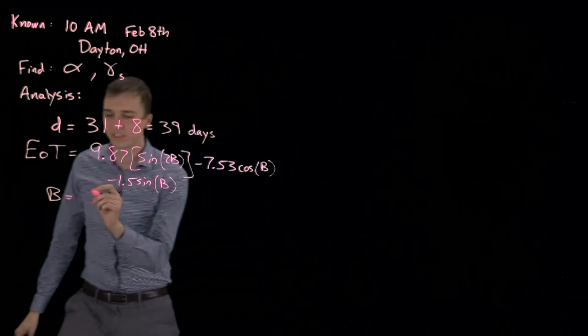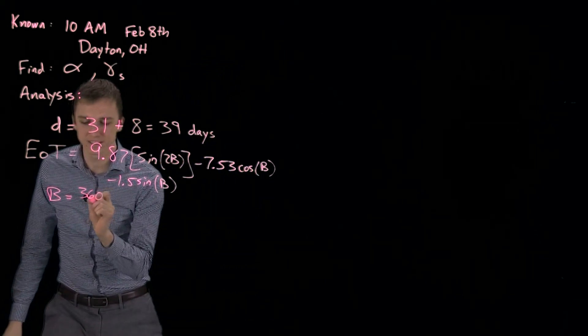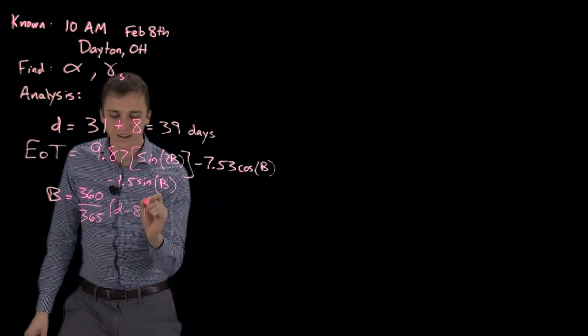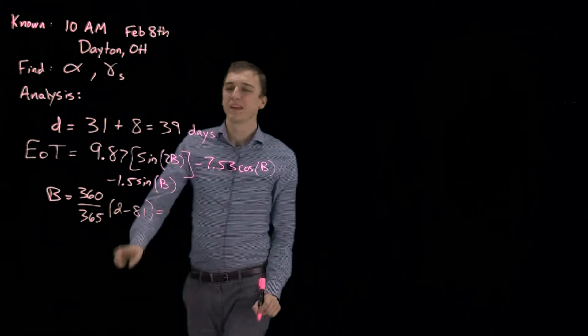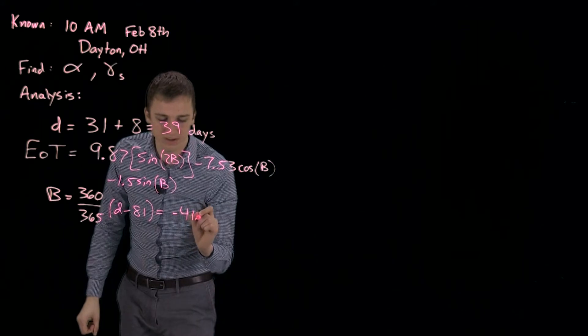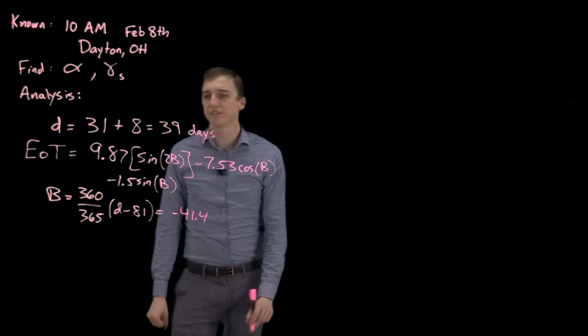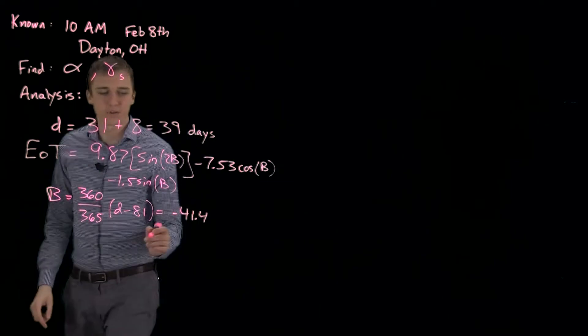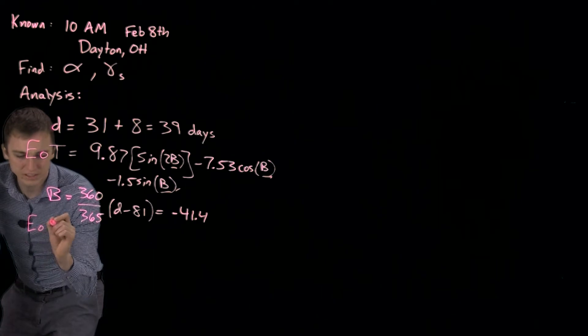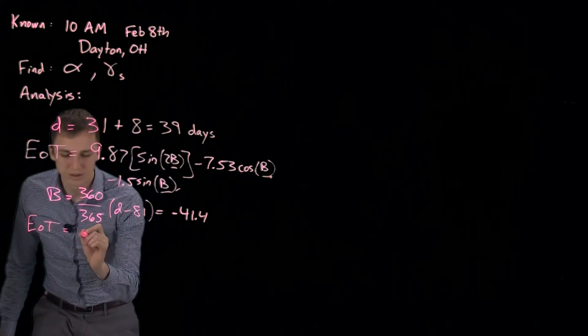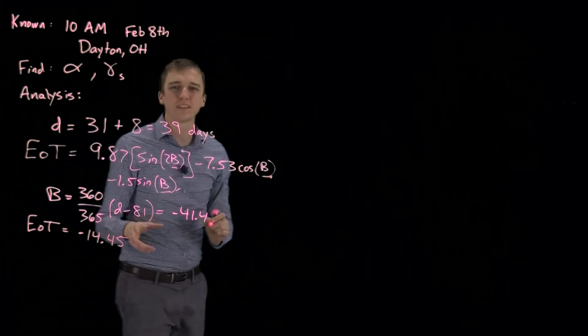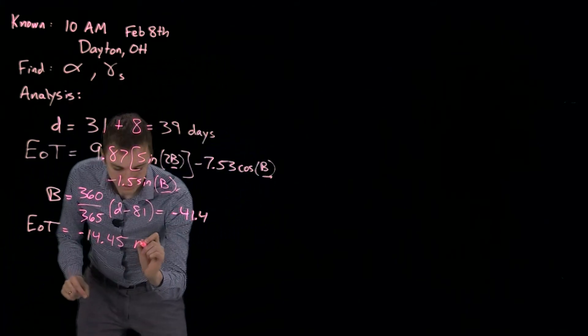So in order to calculate that, we have to find b, which is 360 over 365 times d minus 81. Using a d of 39 days here, then we get b is minus 41.4. And when we plug it in to the equation of time here, here, and here, we get that the equation of time is equal to minus 14.45. And the units of the equation of time are minutes.